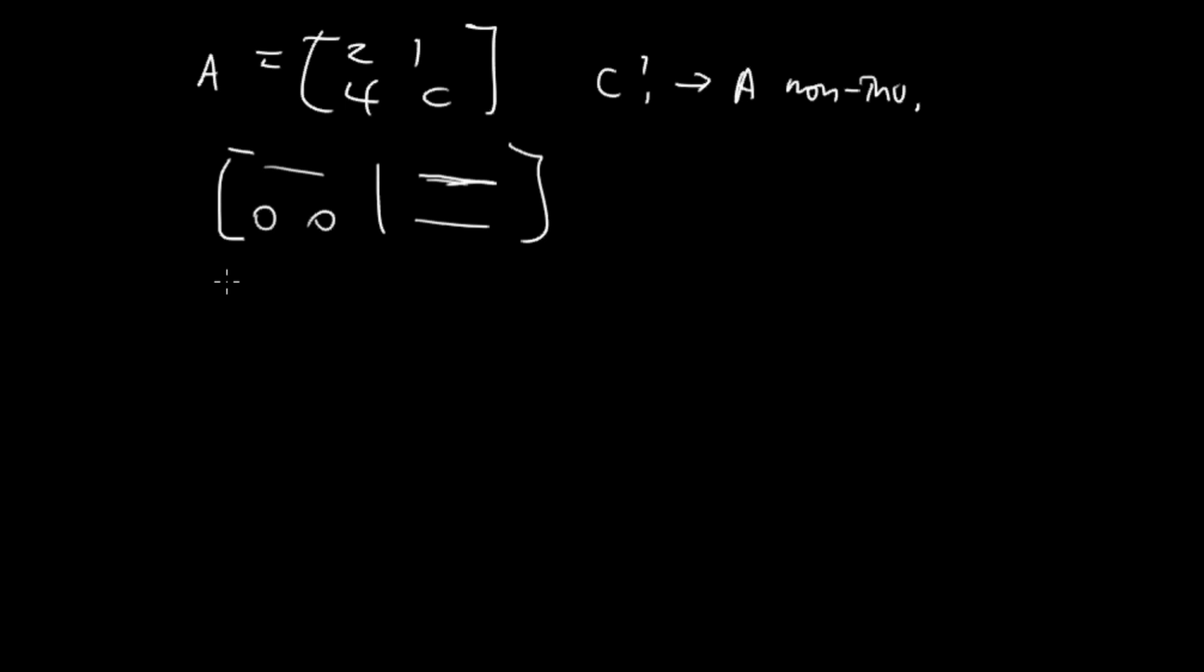So if I multiply row 2 by 1 half here, we're going to have 2, 1. And then here we have 2 and then C over 2.